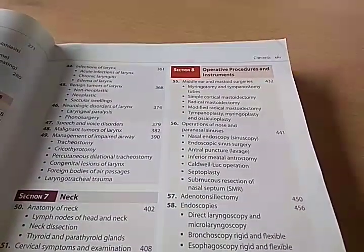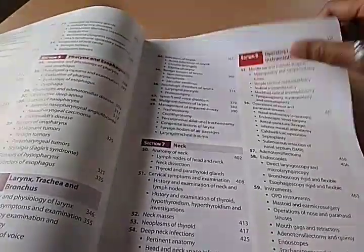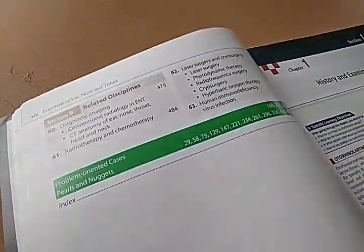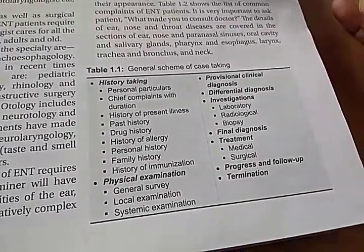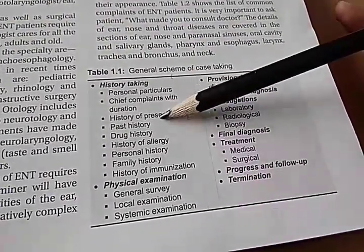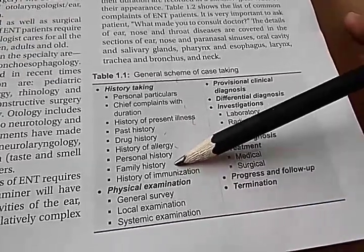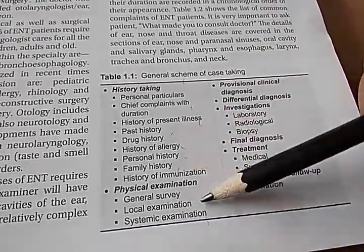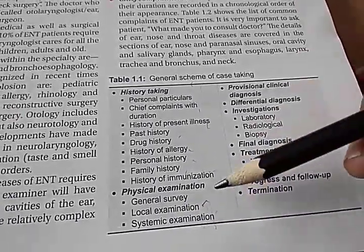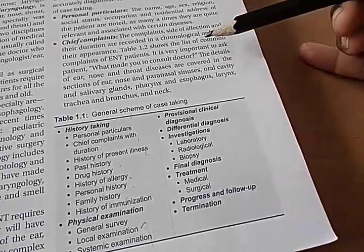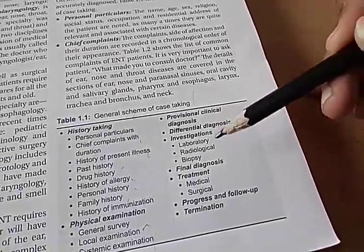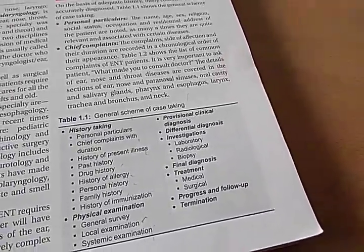This book starts off with history taking, so it may be very useful clinically. They're telling you to take personal particulars, chief complaints, history of presenting illness, past drug history, history of allergic, personal and family history, history of immunization. Then you physically examine and do ENT examination, provisional clinical diagnosis, differential diagnosis, investigations, final diagnosis, treatment, etc.